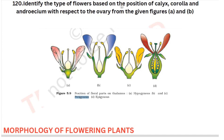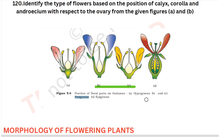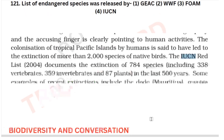The next question asks to identify the type of flower based on position. Options B and C are given in the question, and both B and C are perigynous — based on the position of the calyx, corolla, and androecium with respect to the ovary, both are perigynous only. This is from morphology of flowering plants.